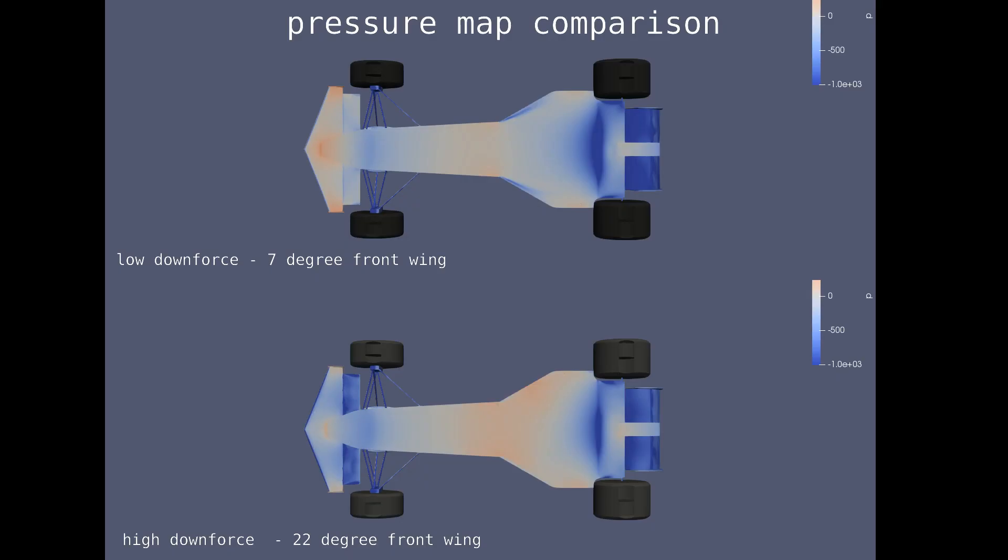The first thing I usually look at for any vehicle is the pressure map of the floor. The difference between low and high flap angle is dramatic. Even the underside of the rear wing is obviously different. The additional 141 newtons of downforce with the high flap angle is all coming from the front as the rear floor section may have less.